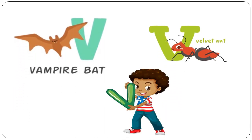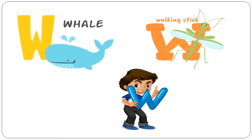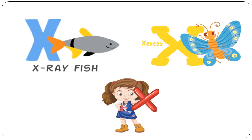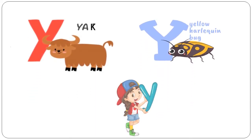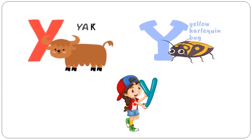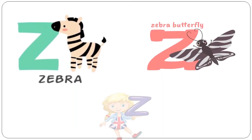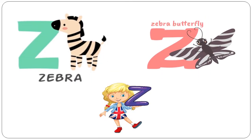V is for Vampire Bat. V is for Velvet Ant. W is for Whale. W is for Walking Stick. X is for X-Ray Fish. X is for Xerxes. Y is for Yak. Y is for Yellow Harlequin Bug. Z is for Zebra. Z is for Zebra Butterfly.